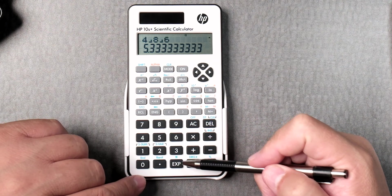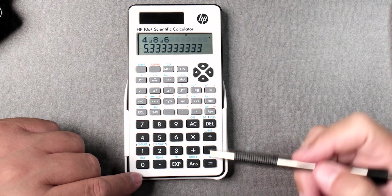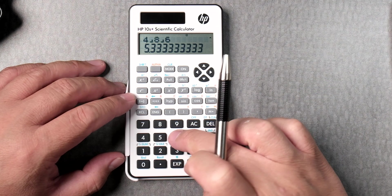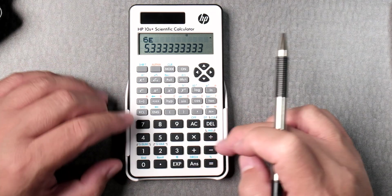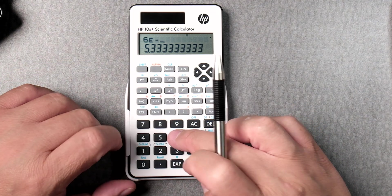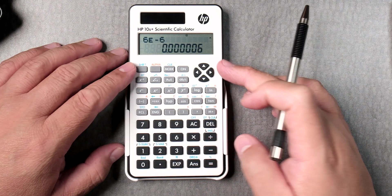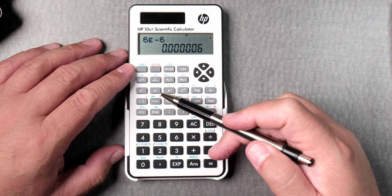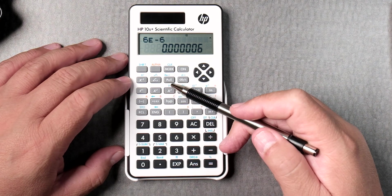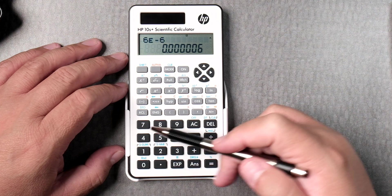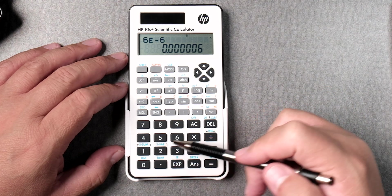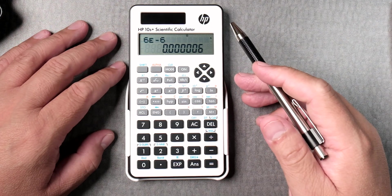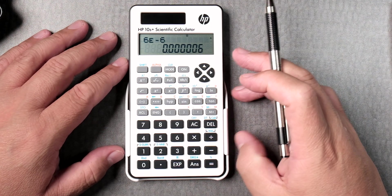You have random number here in pi, percent, 10 to the x, you got your exponent, or times 10 too, right? Like 6 times 10 to the, let's say, minus 6 equals. You got your log key, natural log key, y to the x, x cubed, x squared, the third root. That's nice. There's a lot of empty spaces here, suggesting that the 10s plus is just a lower-end calculator.